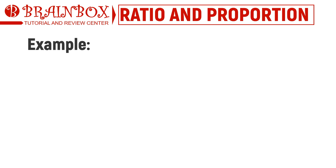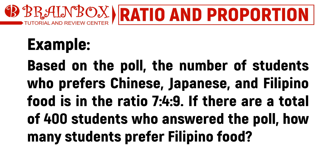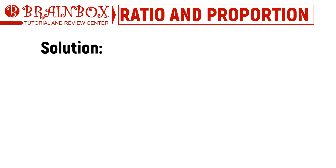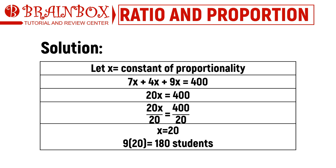Let's have another example. Based on the poll, the number of students who prefer Chinese, Japanese, and Filipino food is in the ratio 7 to 4 to 9. If there are a total of 400 students who answered the poll, how many students prefer Filipino food? We let x be the constant of proportionality and affix it to each partition. Adding all the terms and equating to 400, we simplify and solve for x. Since the problem only asks for the number of students who prefer Filipino food, we multiply x to the corresponding partition. Hence, there are 180 students who prefer Filipino food.